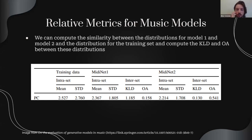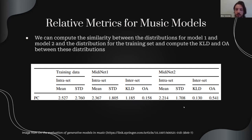We compute the KL divergence and the overlapping area between the model one distribution and the training set, and between the model two distribution and the training set. The idea is that if these distributions are more similar, it means the model basically matches the musicality of what should be in the training set. We do this for each of those absolute metrics. In this diagram example, the overlapping area is higher for the second model — 0.5 instead of 0.1 — which is better, and the KL divergence is also lower. The paper explains in more detail why they use both; there are scenarios where overlapping area can capture differences better than KL divergence. So in this scenario, we would say that MIDI-net two is better than MIDI-net one.